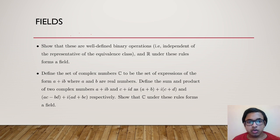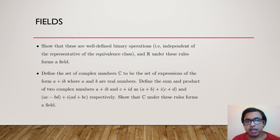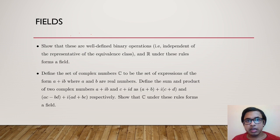Show that these binary operations are well defined: if [x_n] = [x_n'] and [y_n] = [y_n'], then [x_n + y_n] = [x_n' + y_n'] and [x_n·y_n] = [x_n'·y_n']. Furthermore, R under these rules forms a field.